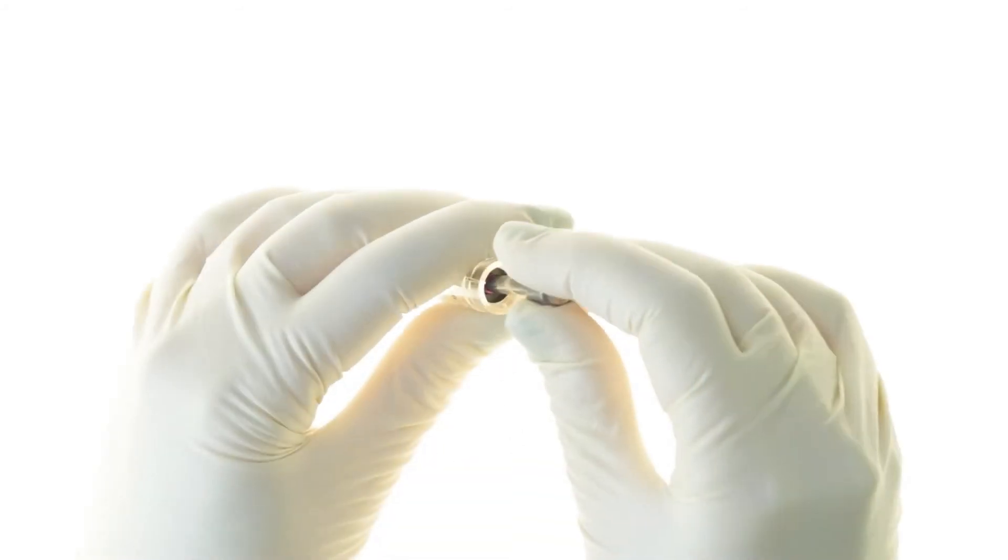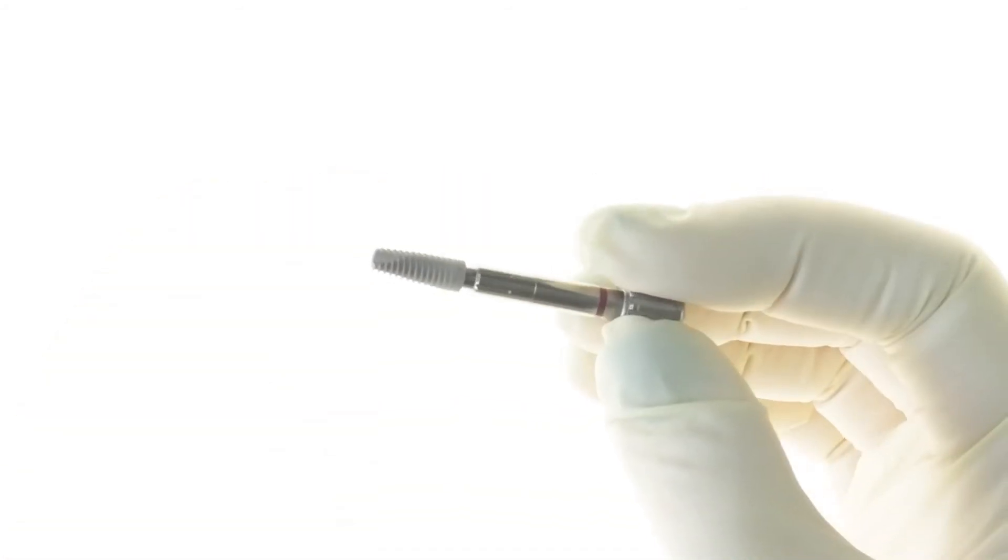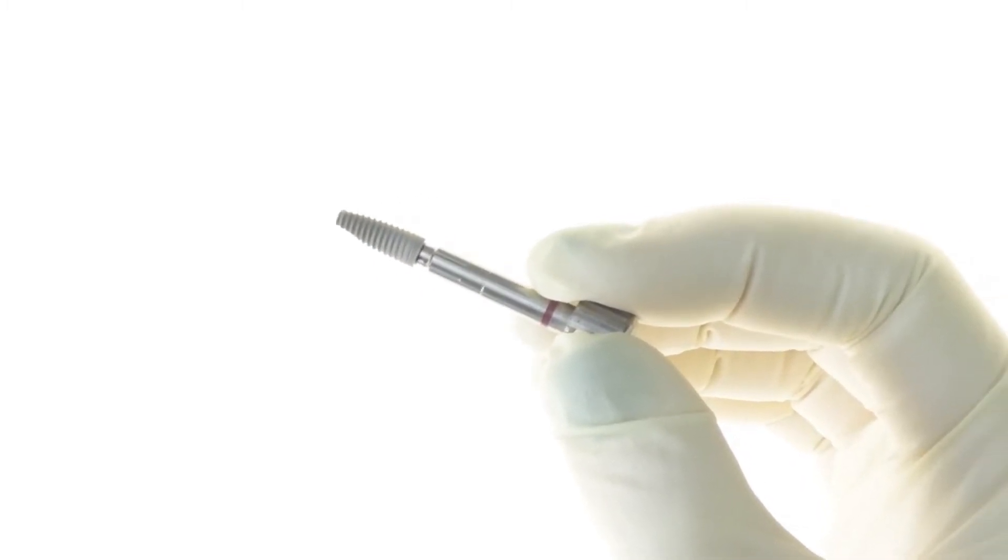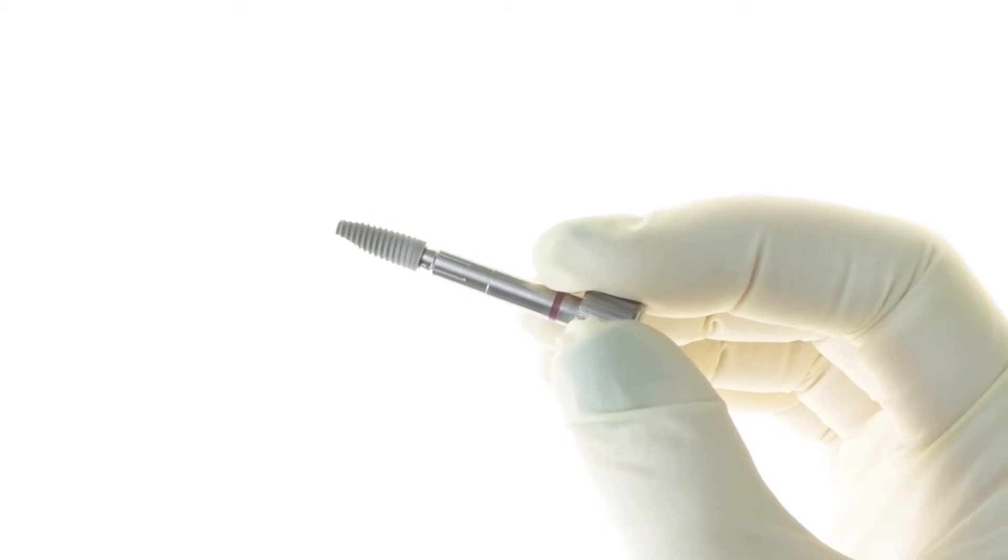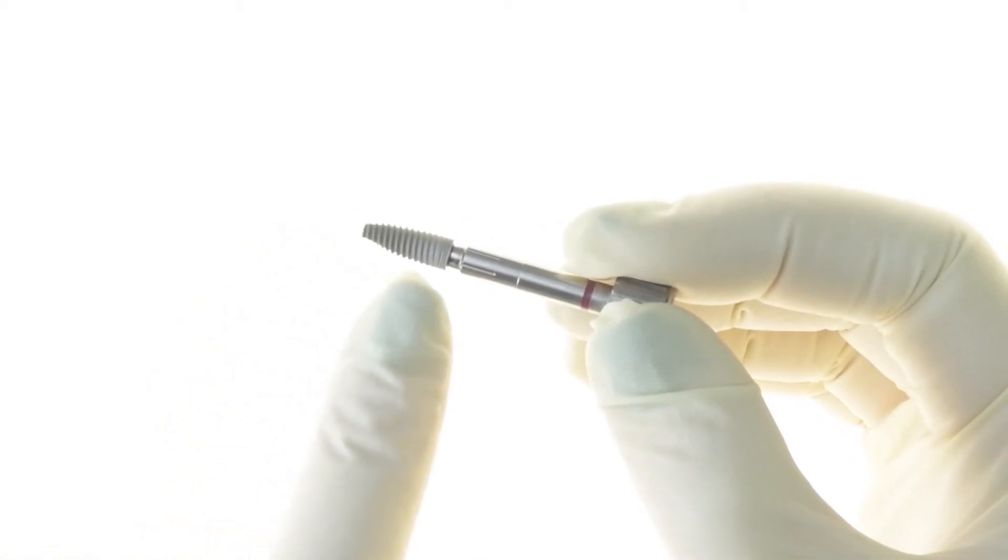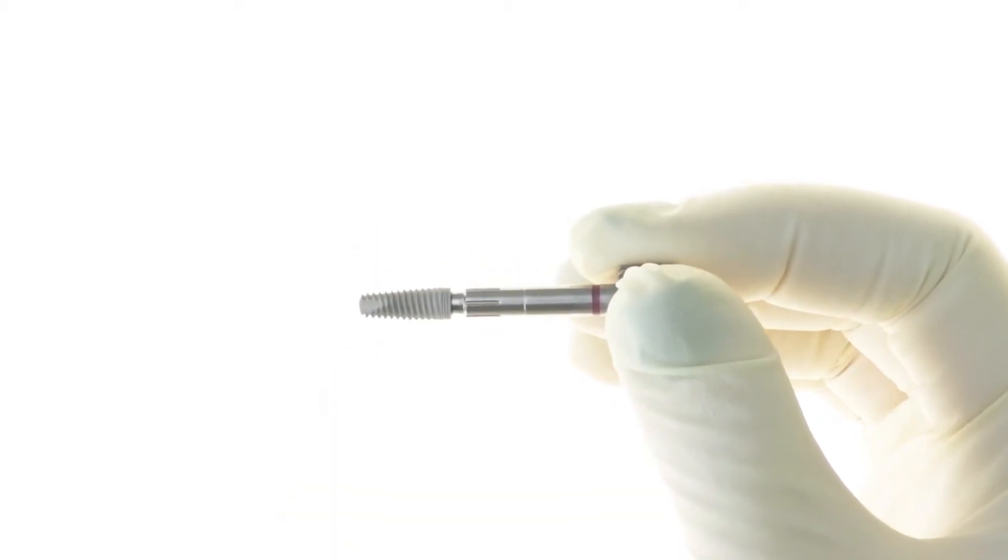The C1 is easily removed from the internal packaging using an insertion tool. The root-shaped design of the C1 provides horizontal compression, while the variable thread design combination of thin cutting threads near the apex and wider threads near the implant neck, together with the self-tapping abilities of the implant, enable high initial stability.